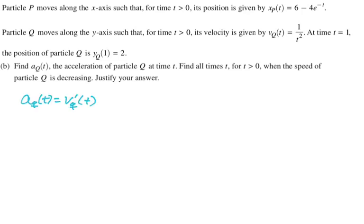So I'm going to start off with a_Q(t) equals v'_Q(t). And then I need to take the derivative of one over t squared because v_Q(t) is one over t squared. So that's going to be t to the negative second, bring down the exponent, subtract one. So that's negative two t to the negative third. I'm going to say that a_Q(t) is negative two over t cubed.